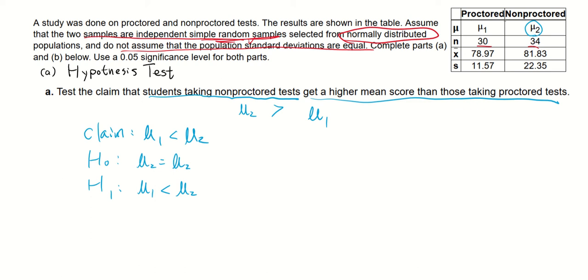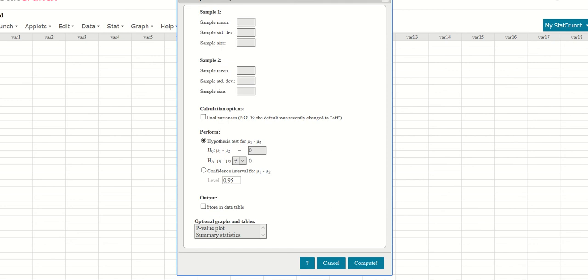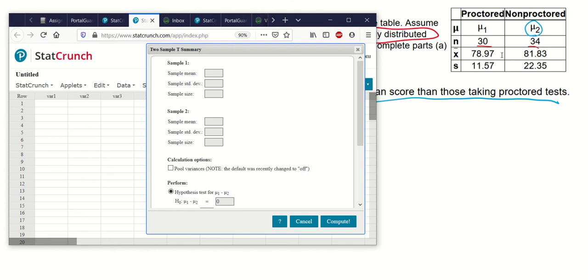So since all the sample values, sample statistics are given to us over here in the chart, I'll just use StatCrunch. So let's go to StatCrunch. Under Stat, go to T-stat. We will be dealing with two samples. You can see two sample or paired. Since those two are independent two samples, we will use two sample instead of paired. So with summary. For our problem, the sample mean for sample one, sample mean is 78.97. Sample standard deviation is 11.57. And the sample size is 30.